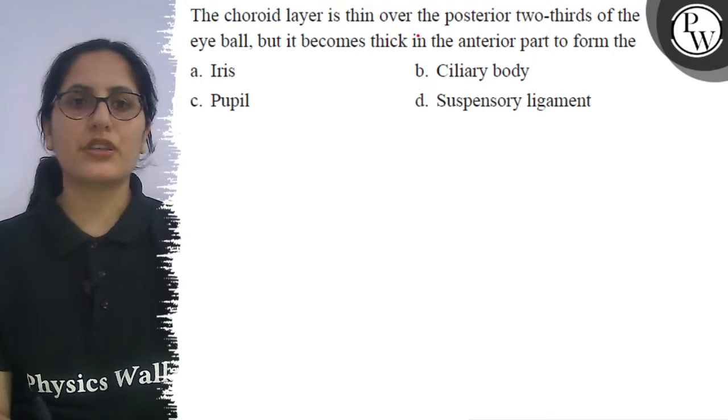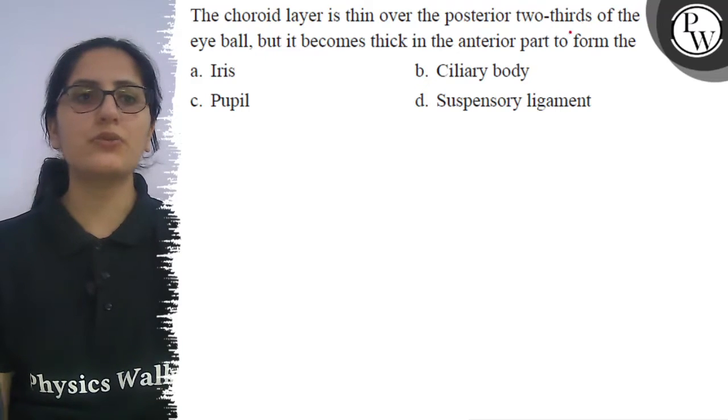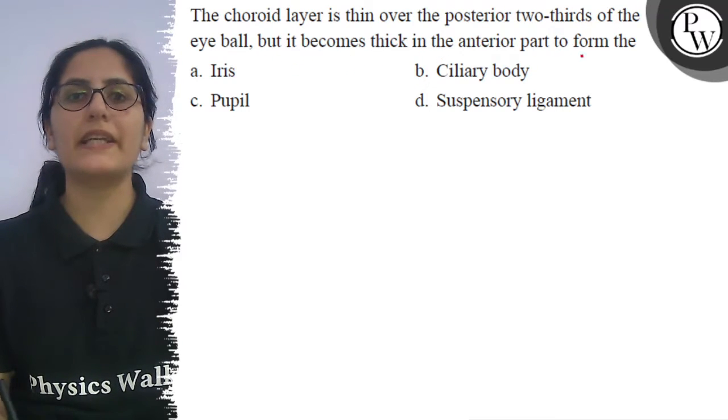Hello guys, let's see the question. The choroid layer is thin over the posterior two-thirds of the eyeball but it becomes thick in the anterior part